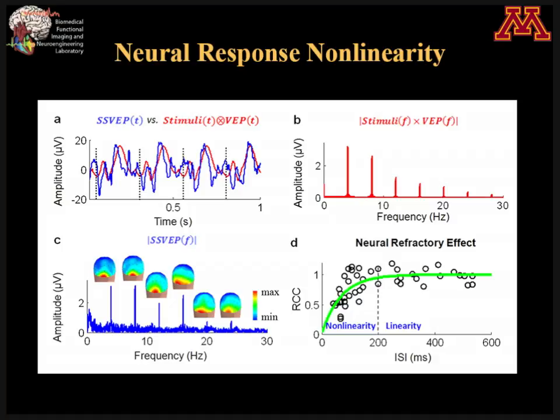Here is the power spectrum of the SSVEP. If it's a linear system, this value divided by this one should give you one. If it's not giving you one, that means it's non-linear. So it's a very simple test.